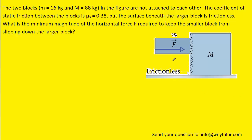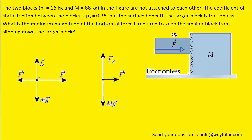Our first step in solving the question is to draw a free-body diagram of the two blocks. In the first free-body diagram, which is of the smaller block with a lowercase m, we have four forces acting: the downward gravitational force, the upward static frictional force being exerted on block m, the applied force pushing the block to the right labeled F, and a reaction force pushing back against the small block.